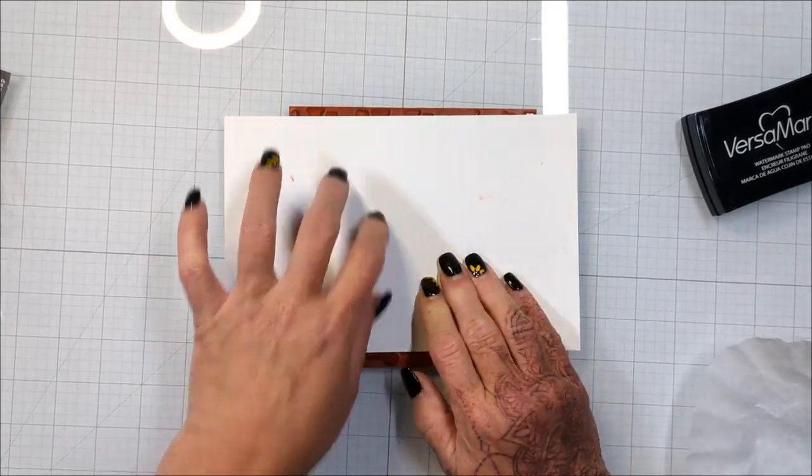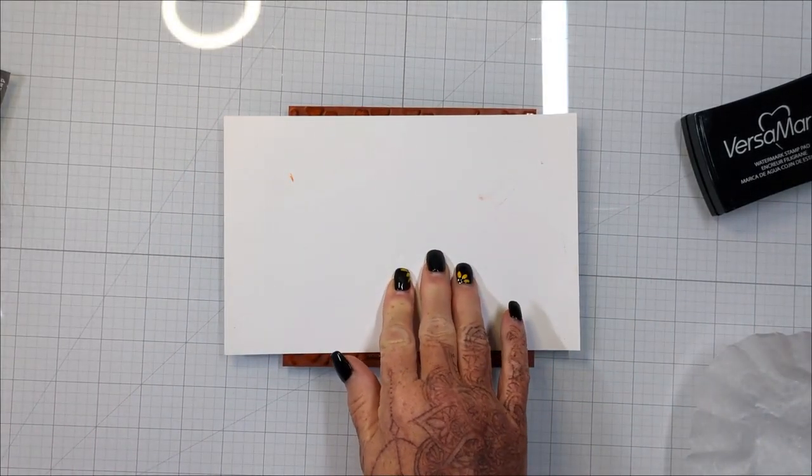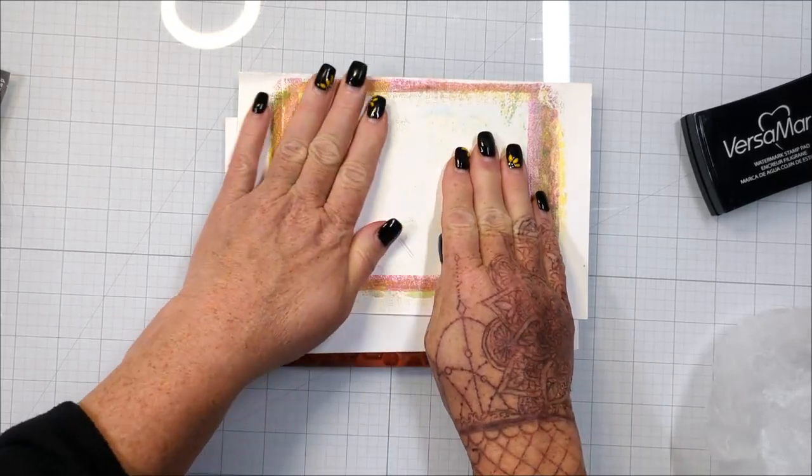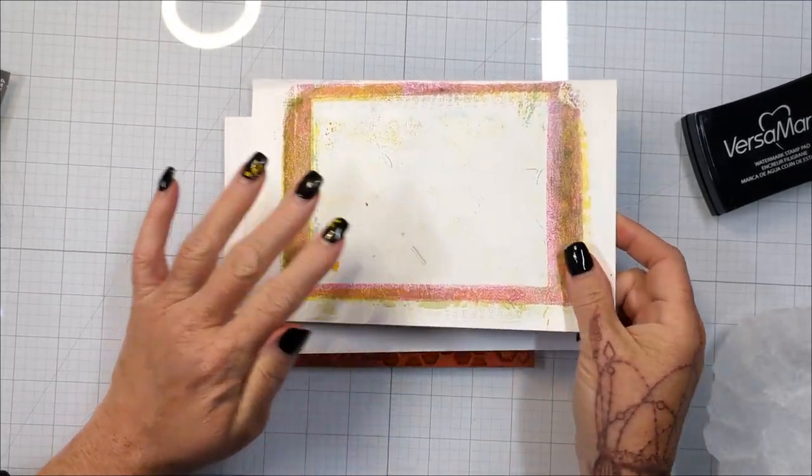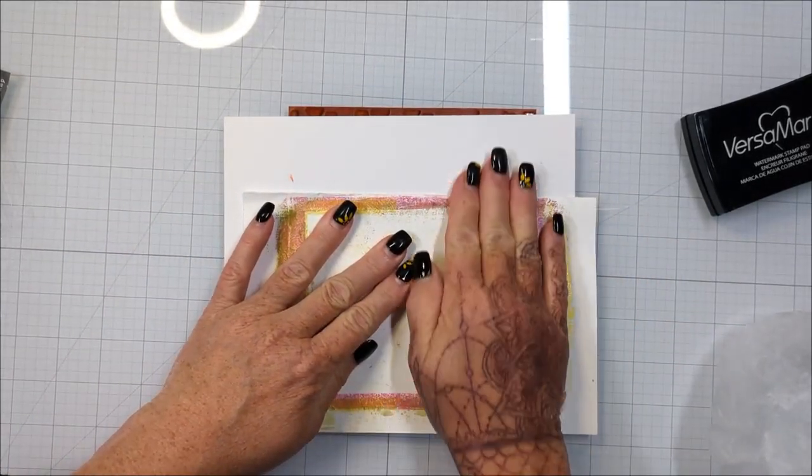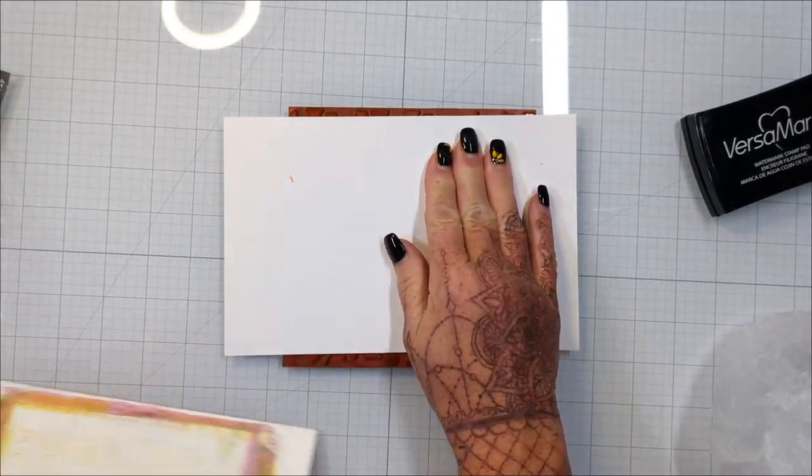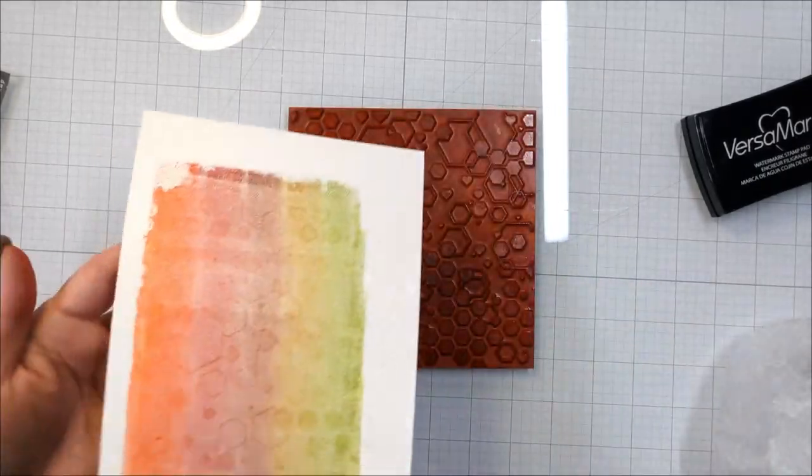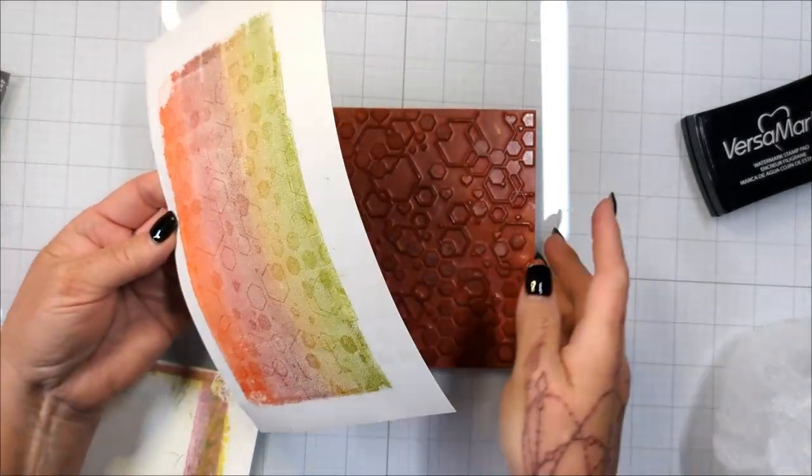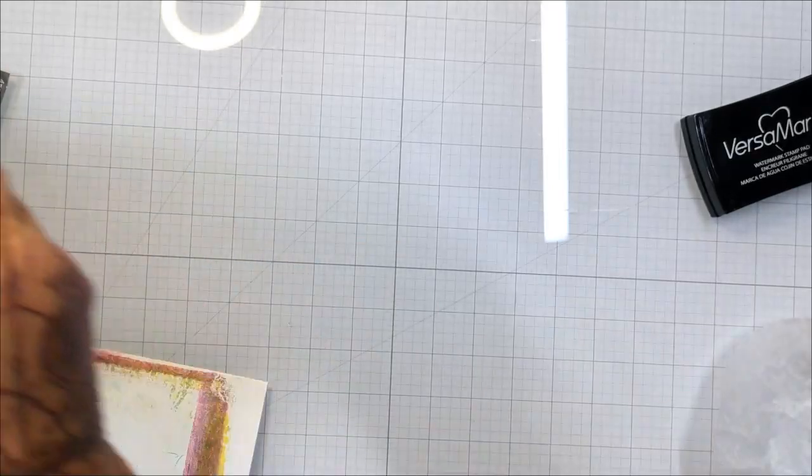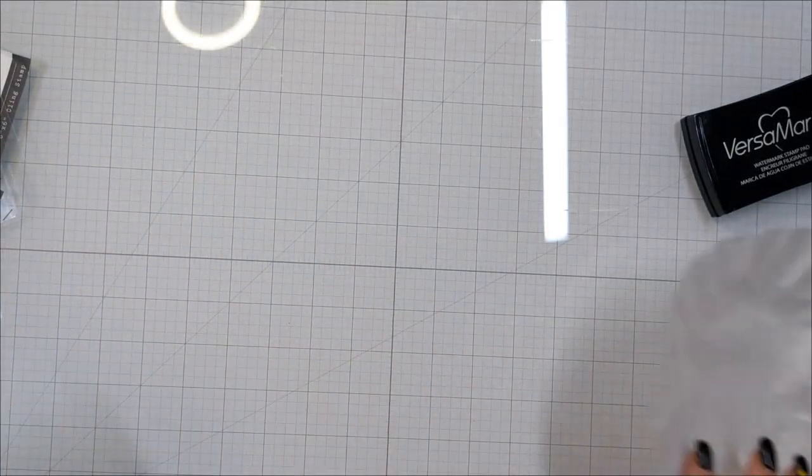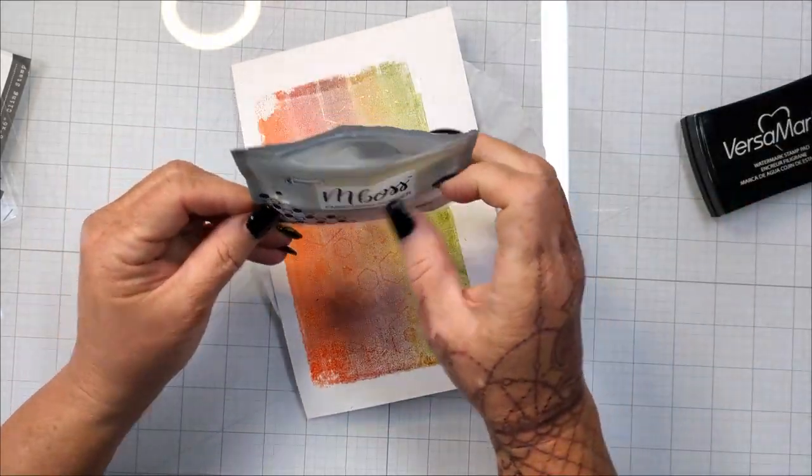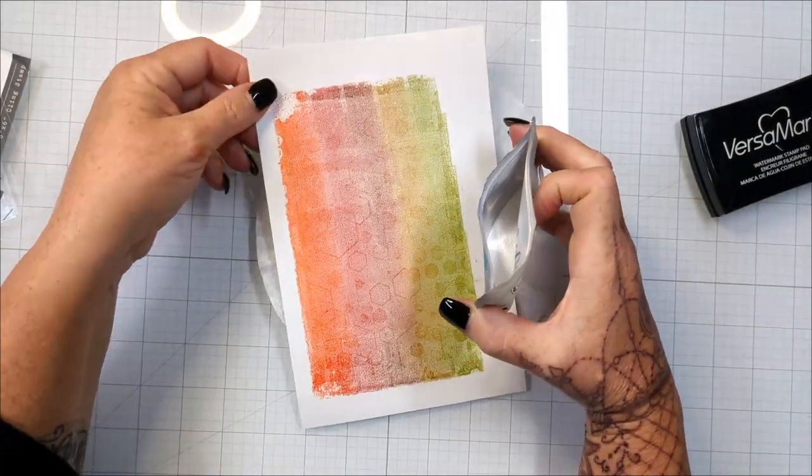I'm using my Versa Mark ink pad. You can use it as a watermark so you get a tone on tone, or obviously you can use it as an embossing ink because it stays sticky and that allows the embossing powder to stick to your ink. It has a long open time, meaning it stays sticky and you have time to work with it.